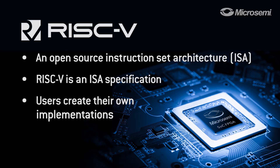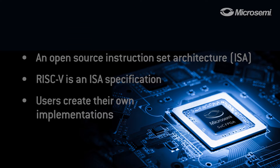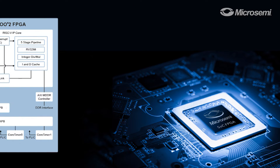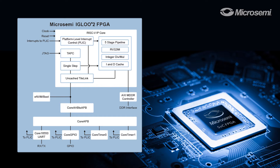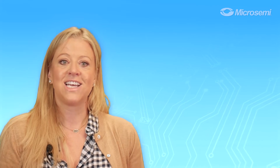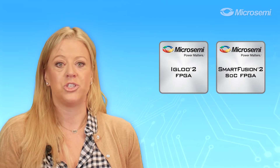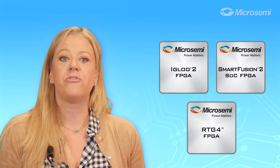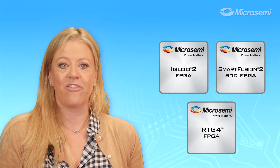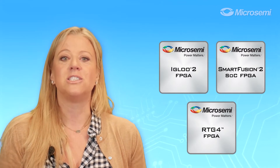MicroSemi is the first FPGA provider to offer an open architecture RISC-V IP core and a comprehensive software solution for embedded designs. In fact, designers can deploy RISC-V in our Igloo 2, Smart Fusion 2, and RTG4 Flash-based FPGAs and SoCs.